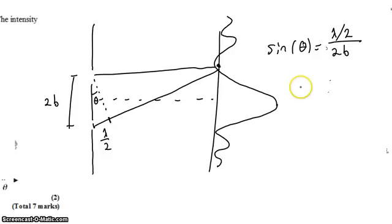Small angle approximation still applies. And so we get to say that that angle to the first minimum is one-quarter of lambda on b, as opposed to just lambda on b like it was before.